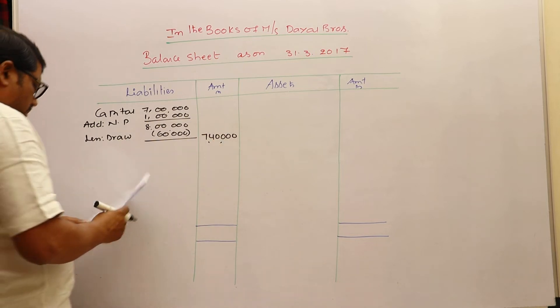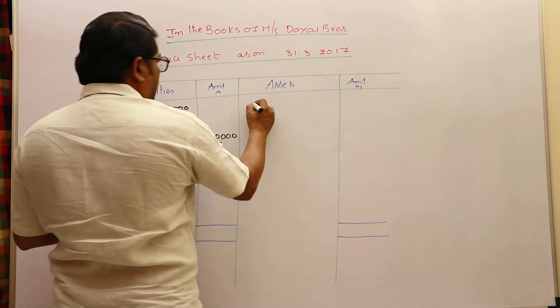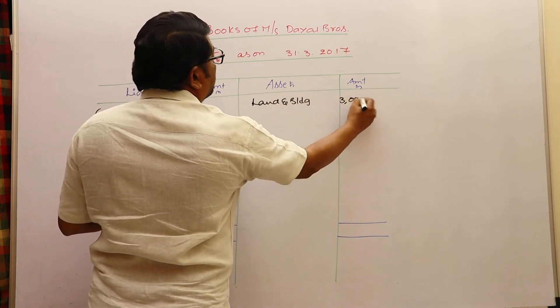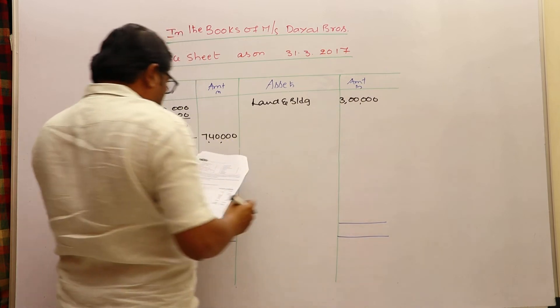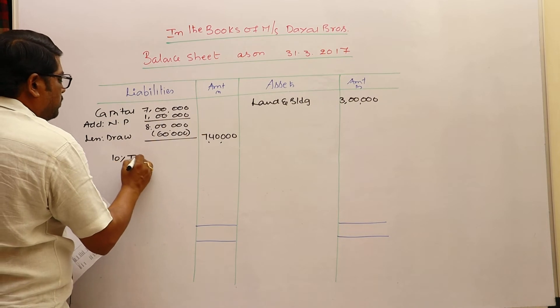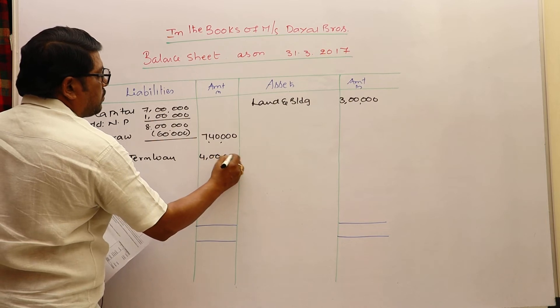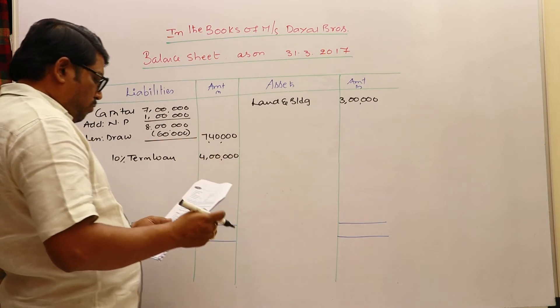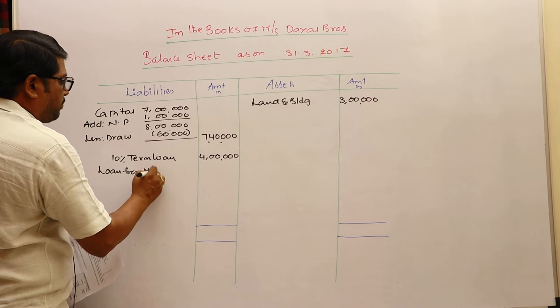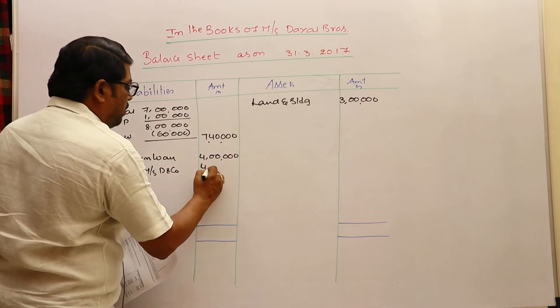Write in outer column seven lakhs forty thousand. Now let us take the items one by one. Land and building is a fixed asset, three lakhs. Tangible fixed asset. Ten percent term loan liability, four lakhs. Ten percent term loan liability. Loan from Messrs D and Company liability, four lakhs sixty thousand.